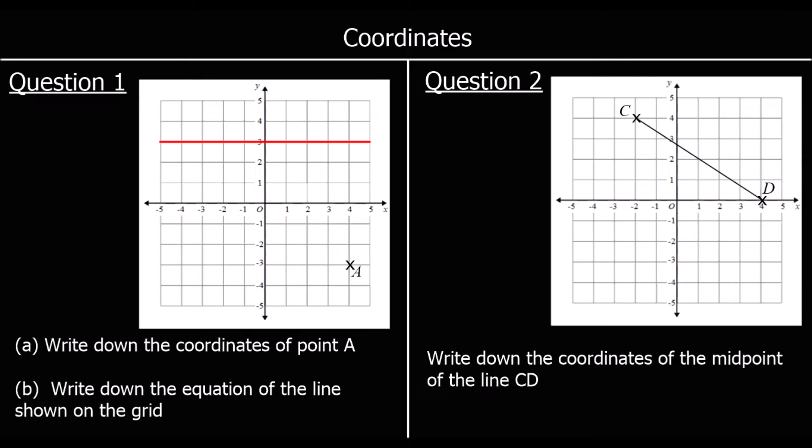Coordinates! So question 1 says, part A, write down the coordinates of point A. With coordinates, we always write the x-coordinate before the y-coordinate. So for point A here, its x-coordinate is 4. So it's 4 along the x-axis. So we say it's got an x-coordinate of 4. So it's a bracket, the 4, then a comma, then the y-coordinate, which is negative 3.